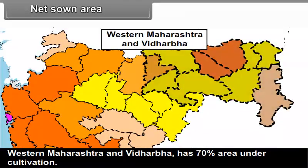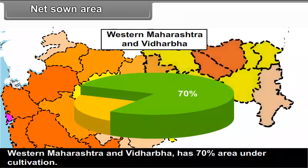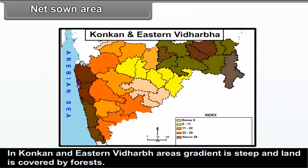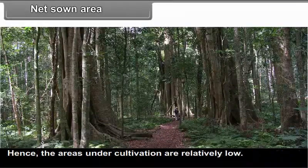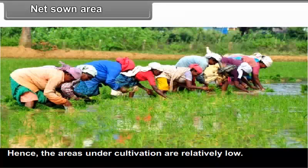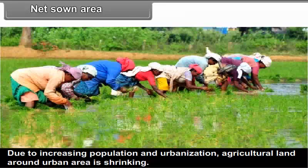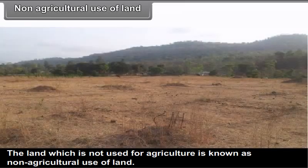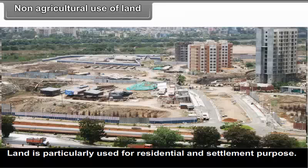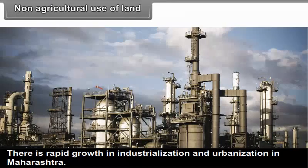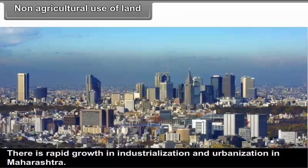Western Maharashtra and Vidarbha have 70% area under cultivation. In Konkan and eastern Vidarbha, the gradient is steep and land is covered by forests, so the areas under cultivation are relatively low. Due to increasing population and urbanization, agricultural land around urban areas is shrinking. Non-agricultural use of land: The land which is not used for agriculture is known as non-agricultural use. Land is particularly used for residential and settlement purposes. There is rapid growth in industrialization and urbanization in Maharashtra, and the percentage of non-agricultural land is increasing.